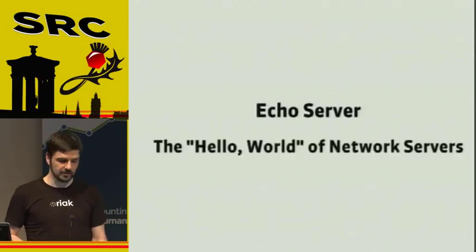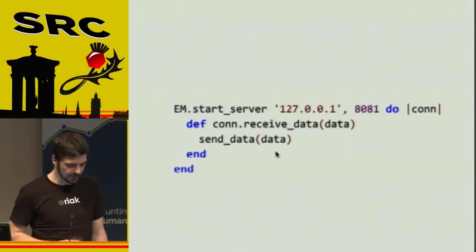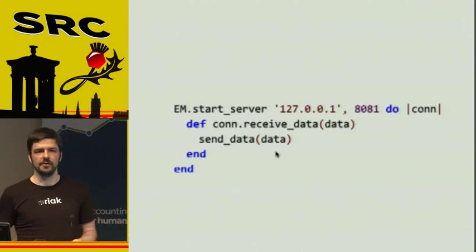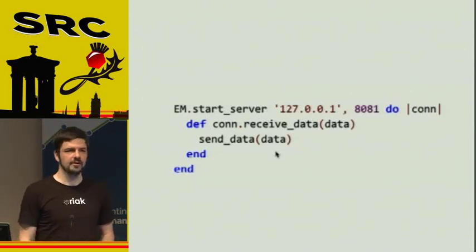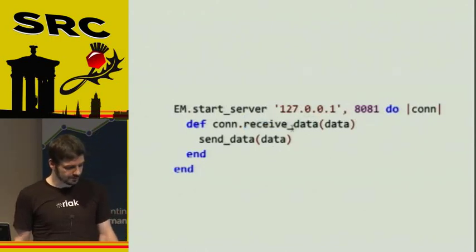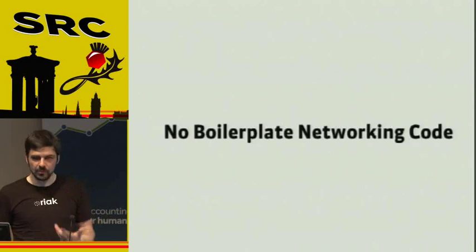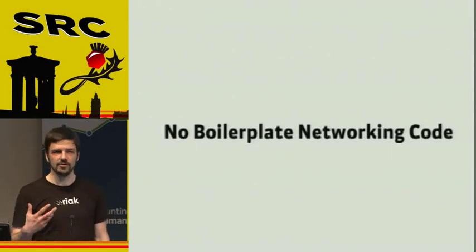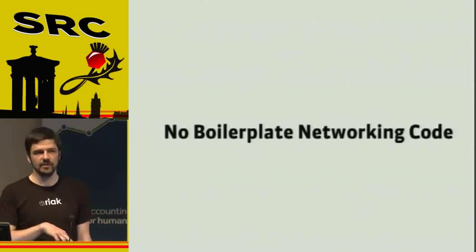Let's start with the basic example of the echo server, which is the hello world of network servers. You'd probably build that in your first semester at college. This is how you would do that in EventMachine. When you compare that to the traditional socket example, there's a lot less boilerplate code here. You don't have to explicitly open the socket — you just say: EventMachine, I want a server on this port listening on this IP address, and whenever some data comes in, received_data is called, and I'm going to just send the data out again.